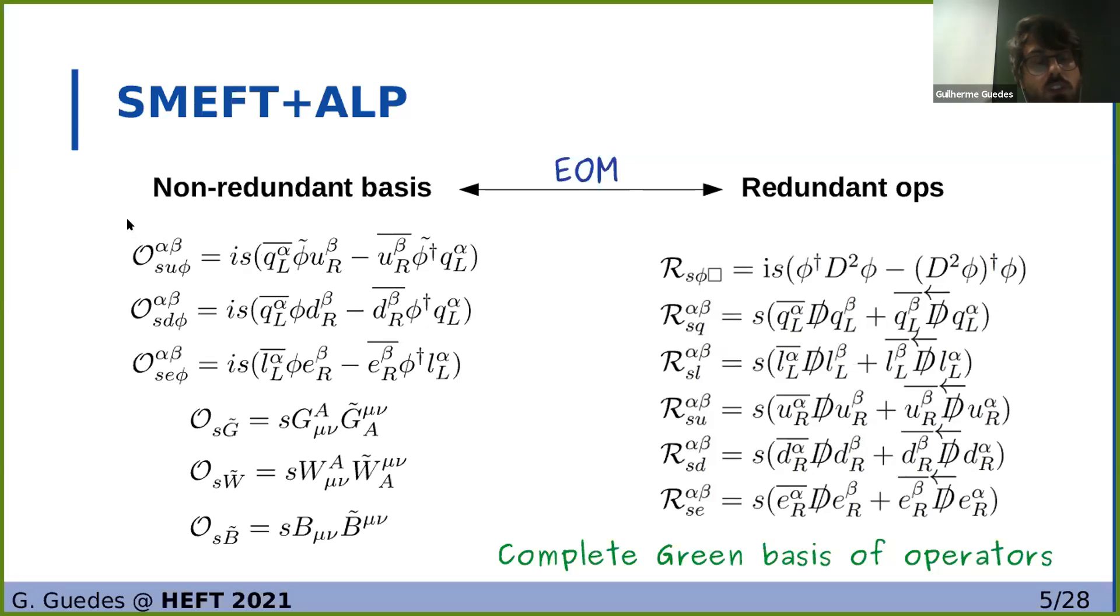So here in the non-redundant basis, we see that we have three Yukawa-like operators and three operators coupling the ALPs to gauge bosons. These operators are all Hermitian, so the Yukawa-like operators will be followed by three by three real matrices in flavor space, whereas this will come with a real coefficient. These are just the CP-even operators, as I mentioned before, and each of them will have a CP-odd counterpart with a similar structure.